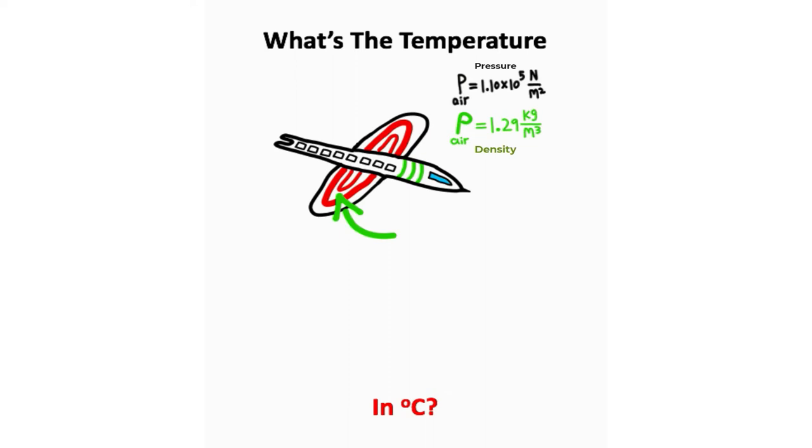So we're going to start with a little aerodynamics problem here, and we have this airplane, and we're looking at one point. Now we're given the pressure and density of air at that specific point, and we're trying to calculate the temperature in degrees Celsius.